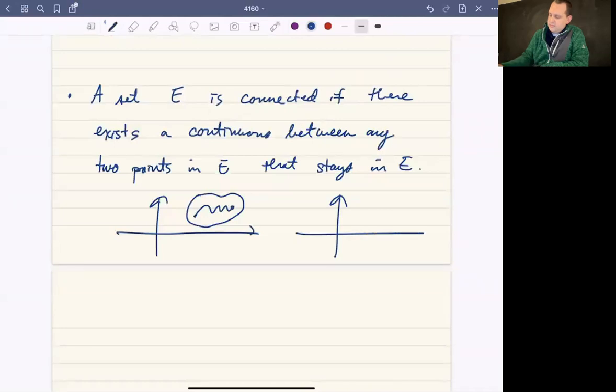If I were to take the union of two circles and then connect them with that line, this set is also connected because you could take any point here and any point here, and you can certainly connect them. You could do the same with the other circle. Or if you take two points in opposite circles, you could find a continuous path that connects them. So these two sets are connected.